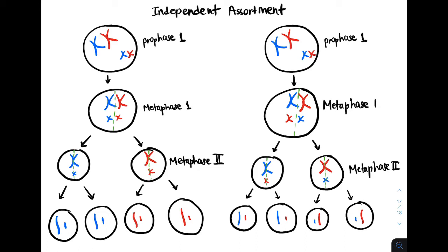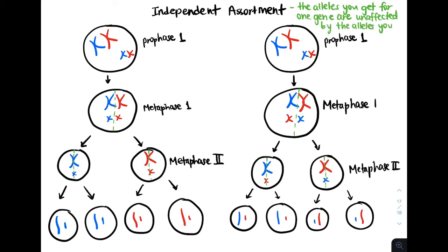This example shows us independent assortment. It is the idea that alleles that you get for one gene are not affected by the alleles that you get for another gene.